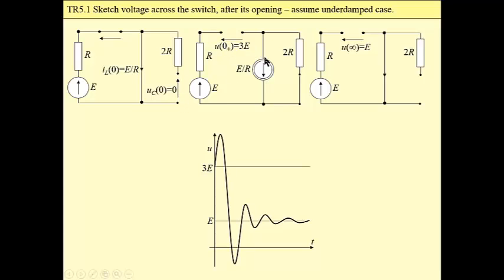After opening the switch, the coil is replaced by a current source with value equal to the initial condition, and capacitor is replaced by a voltage source with its value equal to the initial condition. Since initial condition for capacitor is zero, it is simply a short circuit.